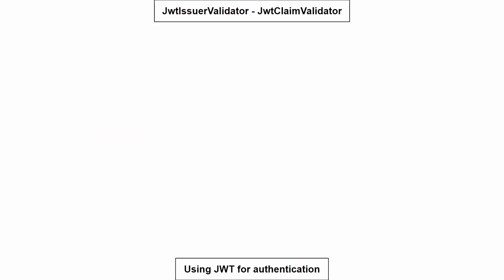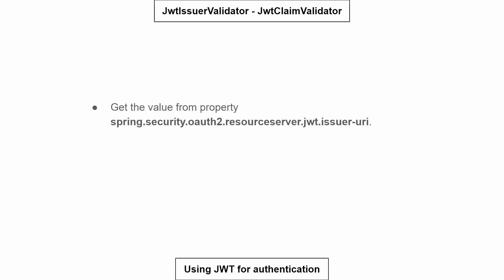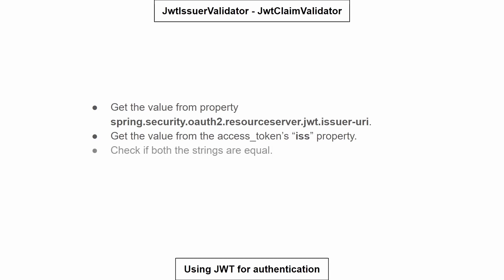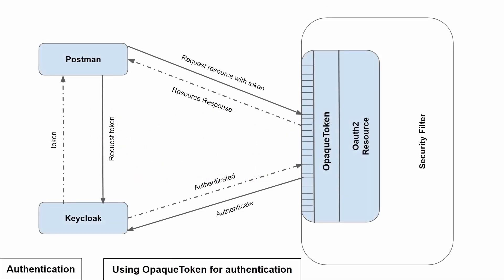In the JwtClaimValidator, it retrieves the value of the issuer URI property specified in the Spring Boot application, then gets the value of the 'iss' property present in the access token, and checks if both values are equal. If they are equal, the token is considered valid; if not equal, the token is invalid due to an invalid issuer. That covers the JWT authentication method.